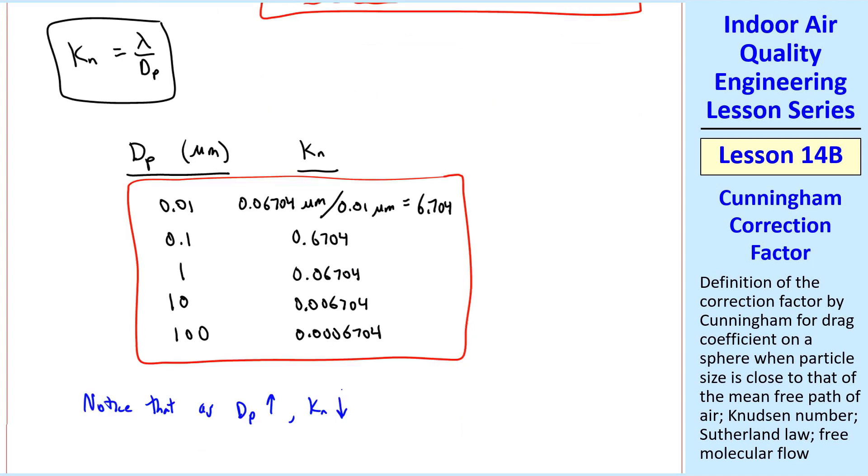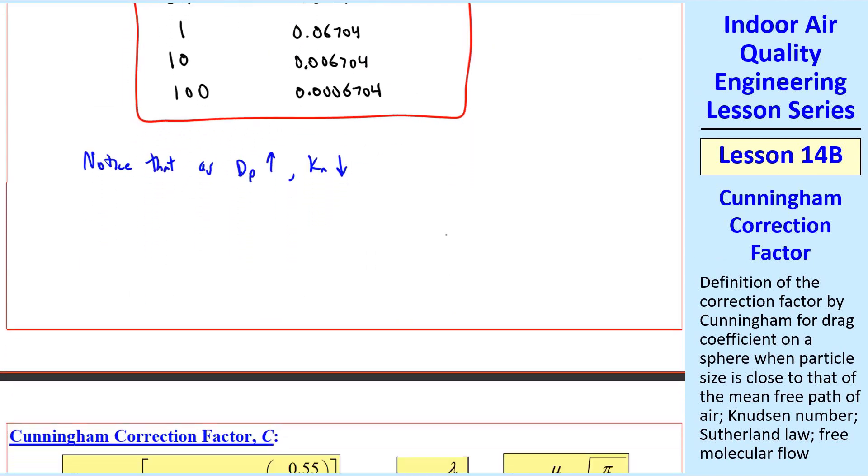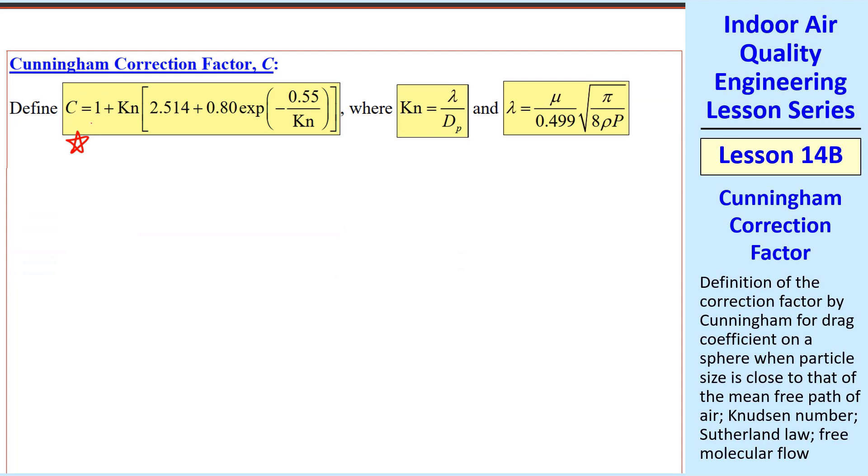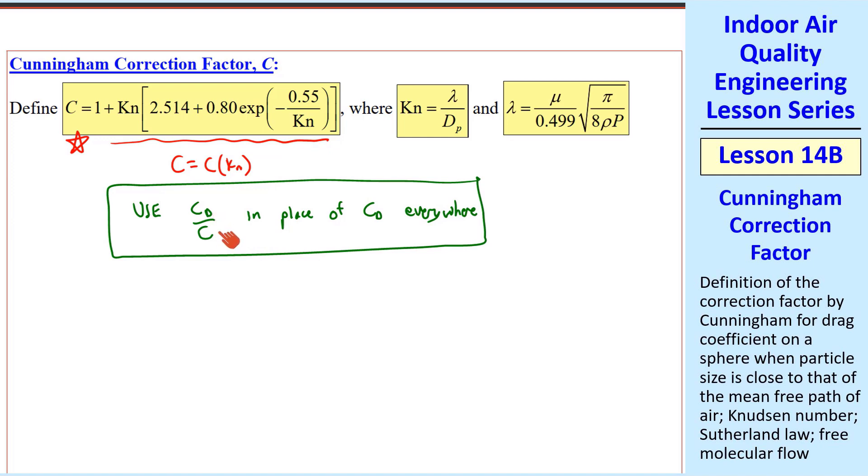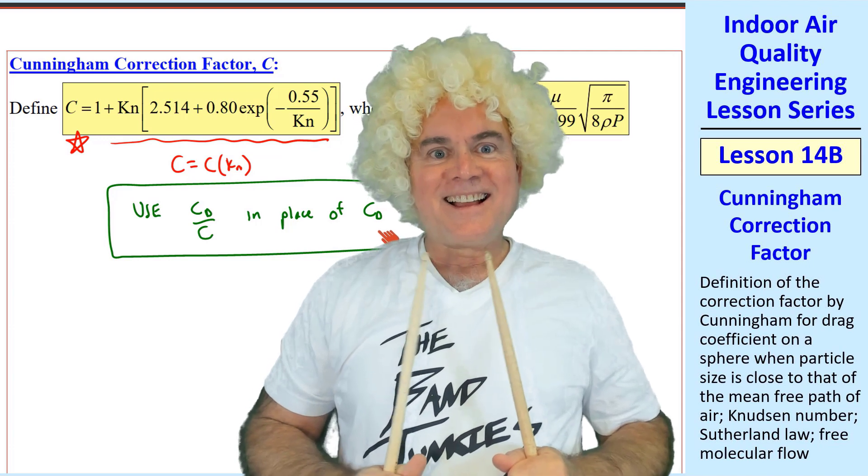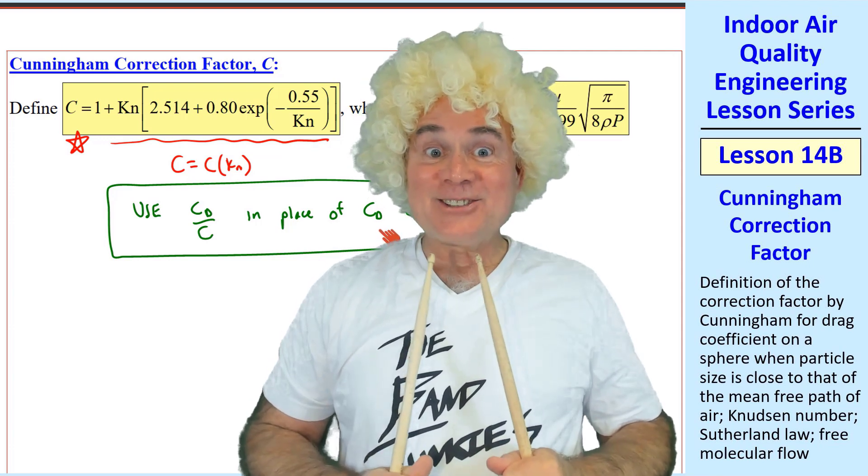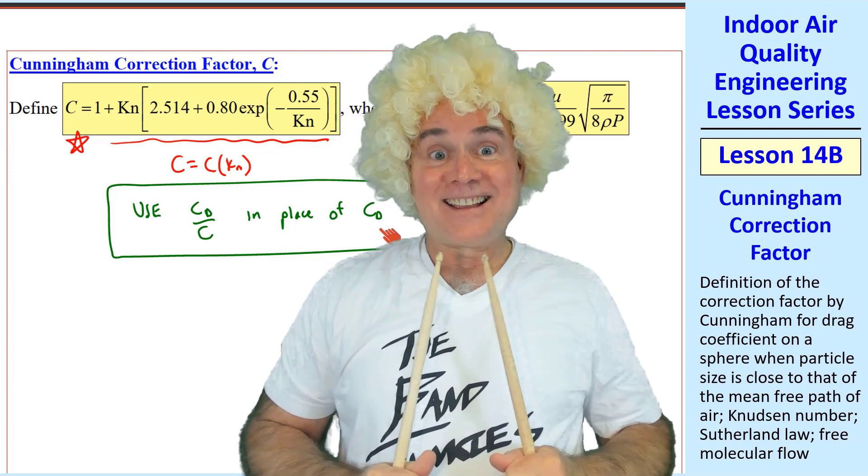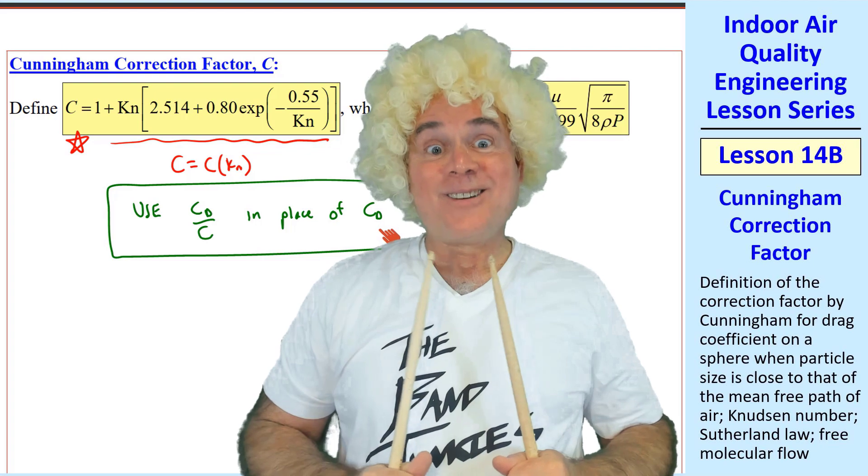Now finally, we can define the Cunningham correction factor, C. Here's the equation for Cunningham correction factor. You see it's a function only of Knudsen number. So once we calculate Kn, we can calculate C easily with this equation. It's a kind of fudge factor which goes in the denominator. We use cd over C in place of cd everywhere that we have a cd. My high school physics teacher taught us not to use fudge factors. Well, B.J., this is engineering, not physics. Engineers like fudge factors.